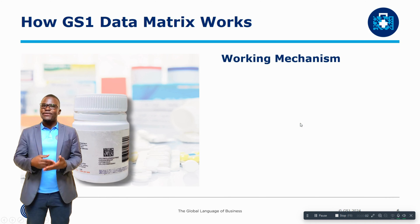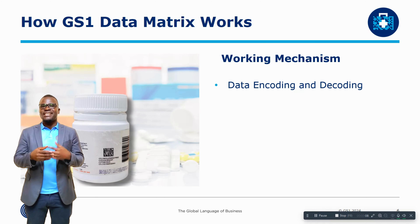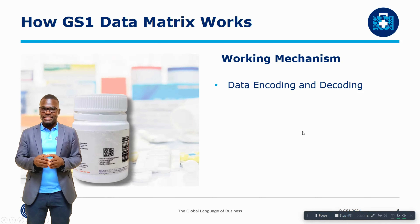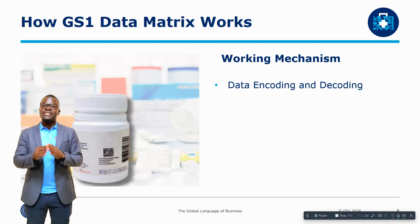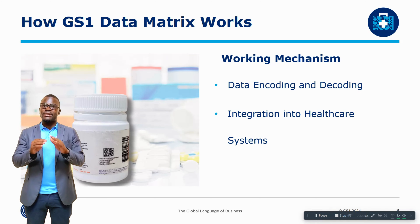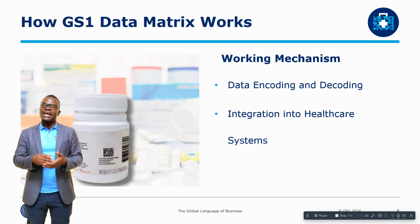Let's understand how the GS1 data matrix works. In terms of data encoding and decoding, information such as the Global Trade Item Number, or GTIN, batch numbers, and expiry dates are encoded into the data matrix. Scanners and software can decode this information, making it accessible throughout the supply chain. In terms of integration into the healthcare system, it can be integrated into electronic health records and hospital management systems, enabling seamless data sharing between manufacturers, distributors, and healthcare providers.